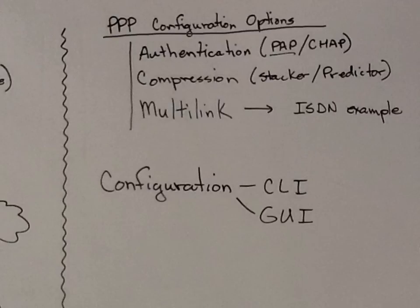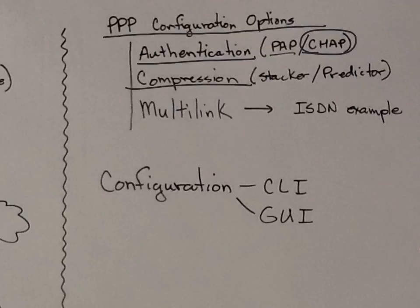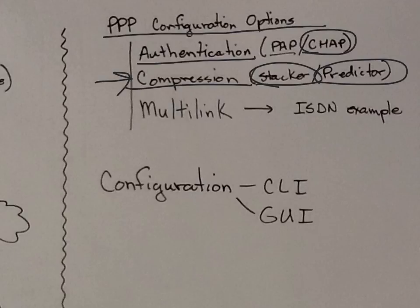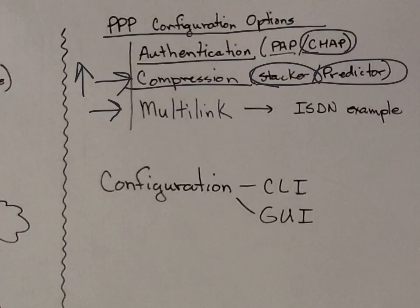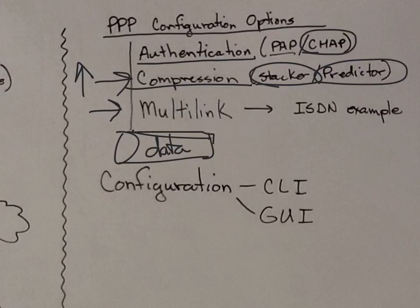PPP configuration options: we can do authentication — nowadays, typically CHAP. We can do compression; here are a couple of options. You need to be concerned when you compress — it's like zipping files. You compress on one end; the cost of compression in time and processing is weighed against saving bandwidth going across, then decompressing on the other end. If your link carries lots of information, compressing and decompressing might be worthwhile to save space on the link.